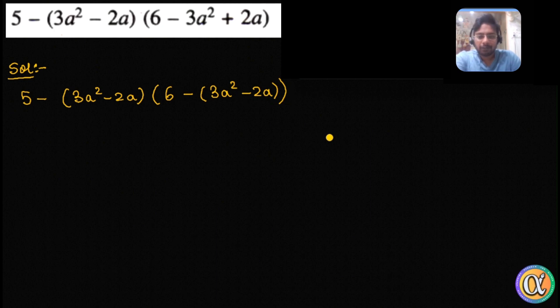Now we can expand from here, but before that I think it's better to make a substitution and write this 3a squared minus 2a as some other variable, let's say x, so that we don't make mistakes during expansion.